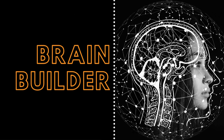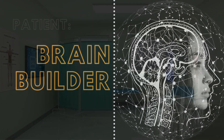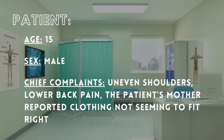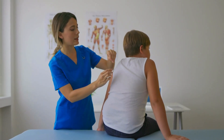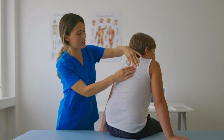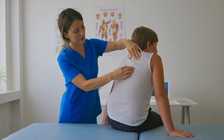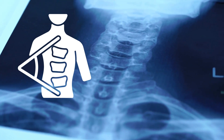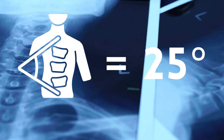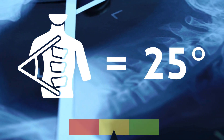Let's take a look at a patient example. The patient's file shows: age 15, male, with chief complaints of uneven shoulders, lower back pain, and clothing not seeming to fit right. During the assessment, the patient's right shoulder is slightly higher than the left, and there is a visible lateral curvature of the spine when viewed from behind. An X-ray is performed, and the Cobb angle — which measures the degree of spinal curvature — is calculated at 25 degrees, indicating moderate scoliosis.